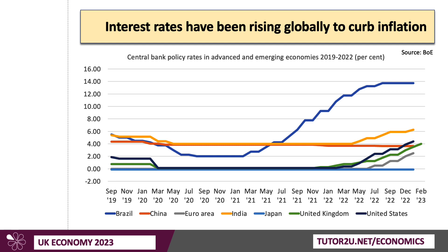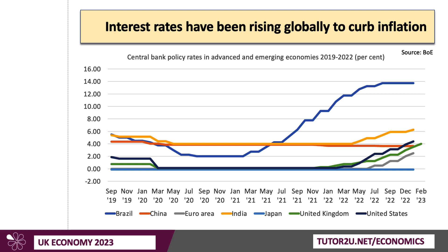The Central Bank in Brazil has raised interest rates from 2% in 2020 to 14% now. The effects of monetary policy on aggregate demand often operate with time lags, but typically they will cause a slowing of growth for these major economies. So, how might higher interest rates affect aggregate demand? This is a common exam question.